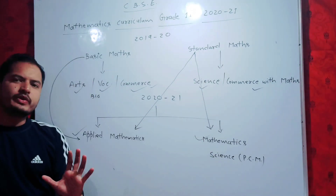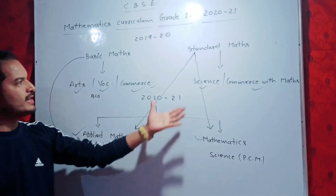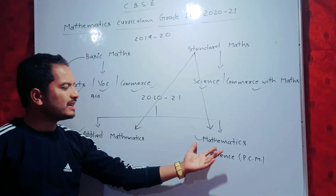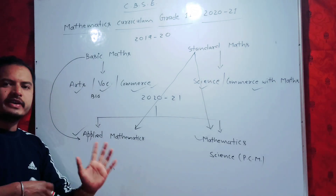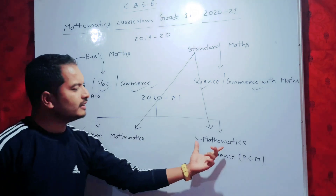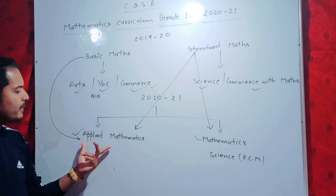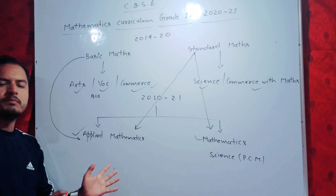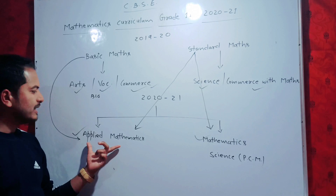Now I am going to tell you what is the difference between applied mathematics and simply mathematics. If you are going for BSc, BSc Honours, BTEC, or IIT, then you should select standard mathematics. And if you are going with commerce, then you should take applied mathematics, because in commerce, business studies and economics, we use applied mathematics.